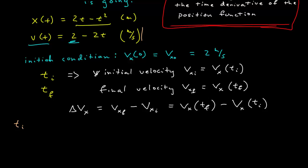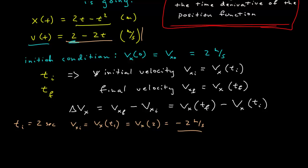As an example, let's take an initial time t_i = 2 seconds. The initial velocity is v_x evaluated at 2, which gives 2 − 2(2) = 2 − 4 = −2 meters per second. Note this is still a vector: in one dimension the magnitude is the absolute value, which is 2, and the negative sign gives the direction — pointing in the negative x direction. So the velocity vector has magnitude 2 m/s pointing in the negative x direction.